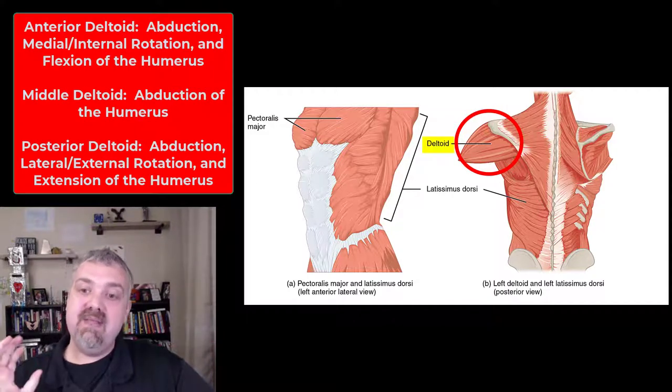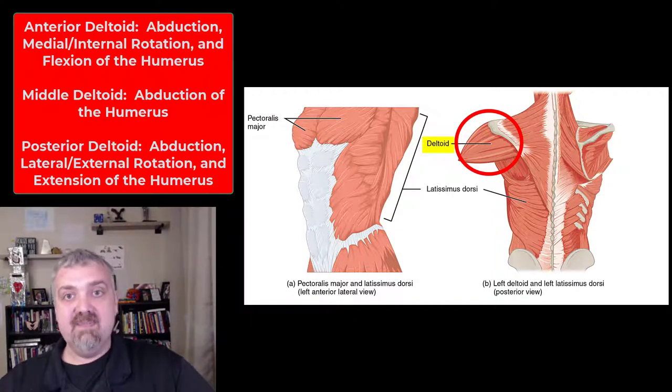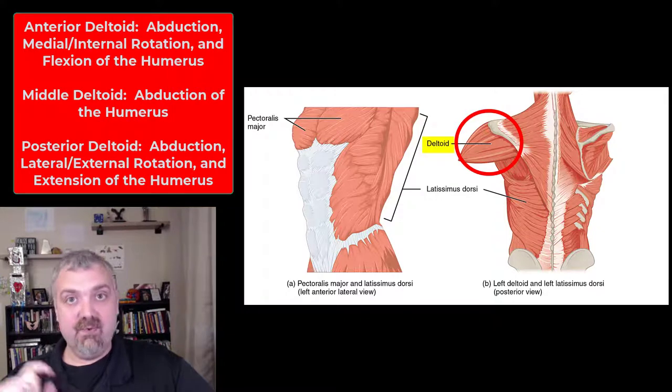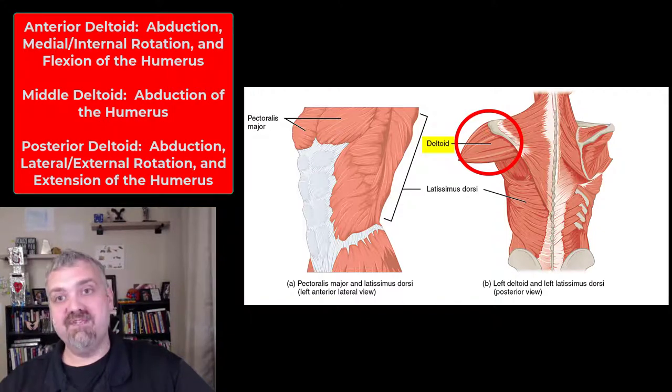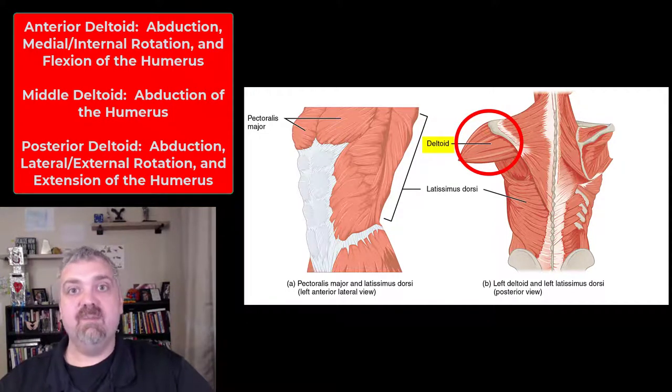That's going to be another look at the pectoralis major and latissimus dorsi, and a deeper look at the three parts of the deltoid — anterior, middle, and posterior. Hope this helps.